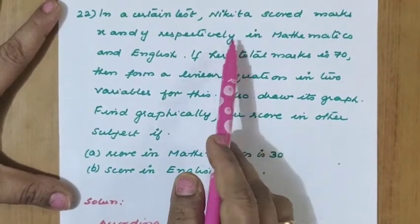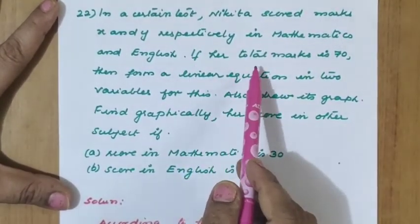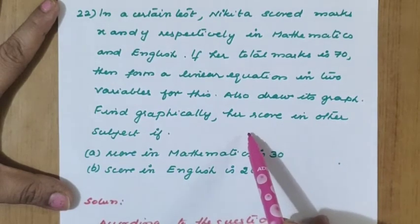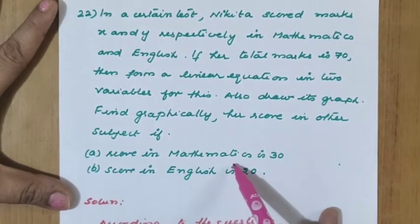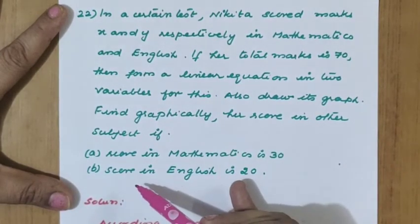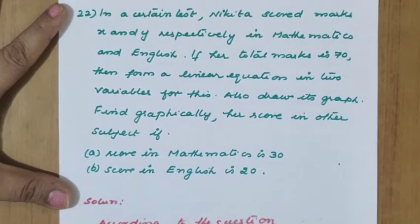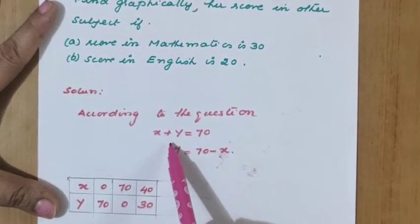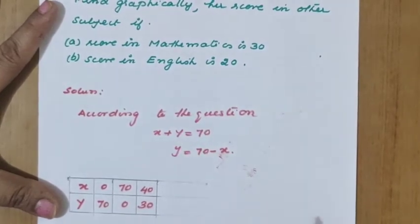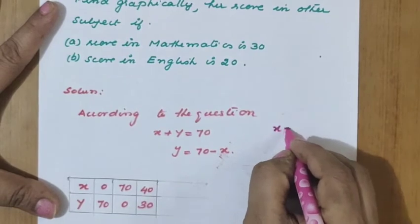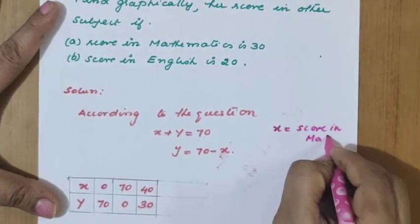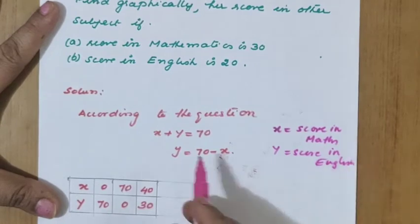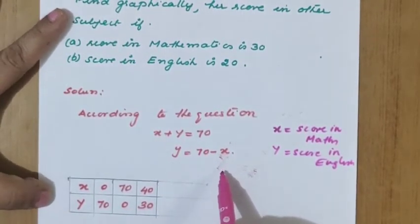Next question: Nikita scored marks x and y in mathematics and English respectively. Her total marks is 70. We need to form a linear equation in two variables, draw its graph, and find graphically her score in one subject given the other. According to the question, the sum of the two scores is 70, so we write x plus y equal to 70, where x is the score in mathematics and y is the score in English.